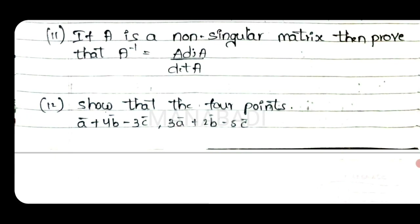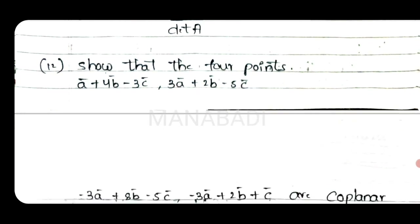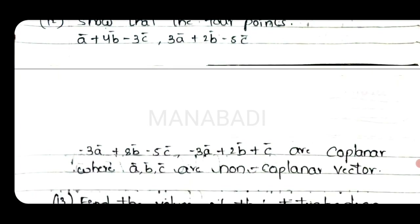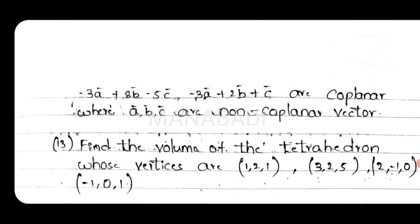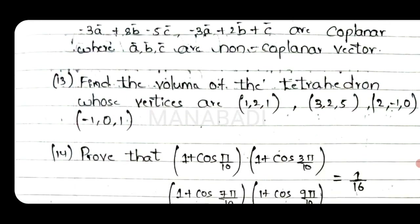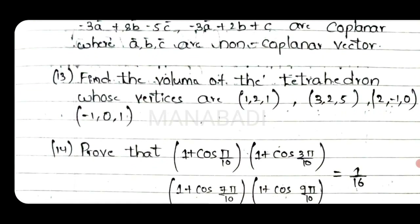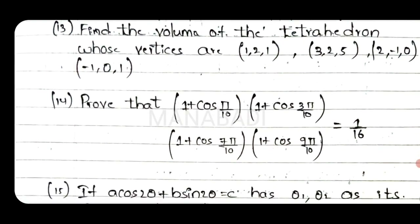Next, show that the four points A vector plus 4B minus 3C, 3A vector plus 2B vector minus 5C vector, minus 3A plus 8B and minus 5C, minus 3A plus 2B plus C are coplanar, where A, B, C are non-coplanar vectors. This is the twelfth question. Find the volume of the tetrahedron whose vertices are A, B, C, D.